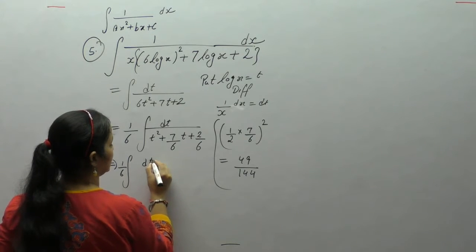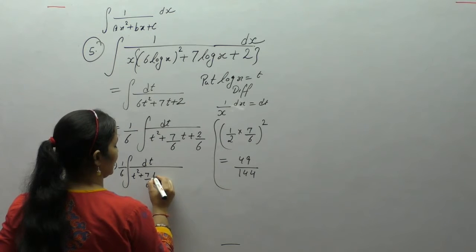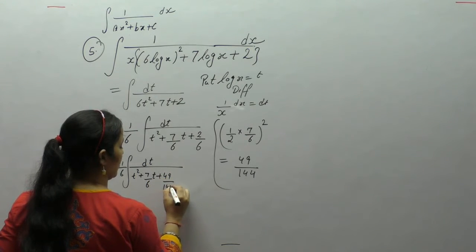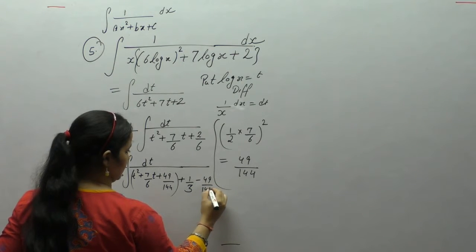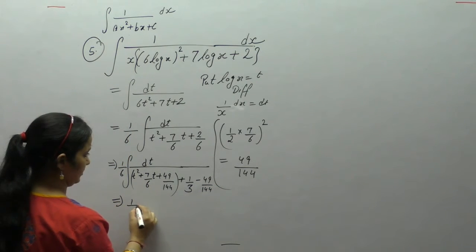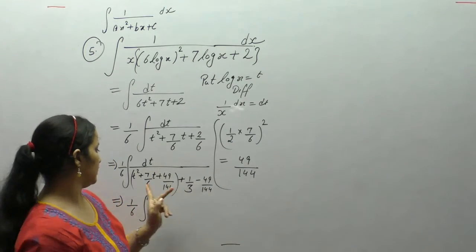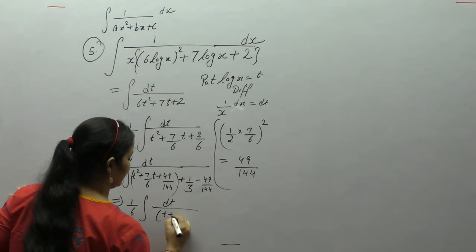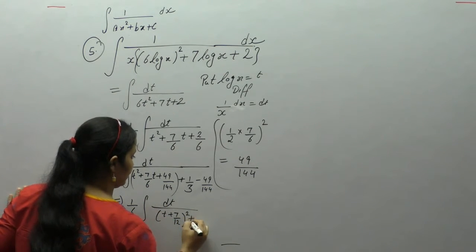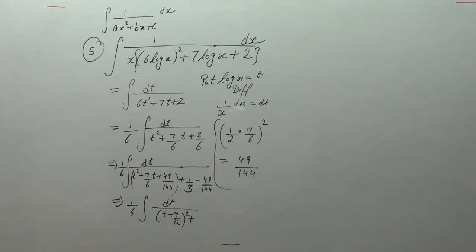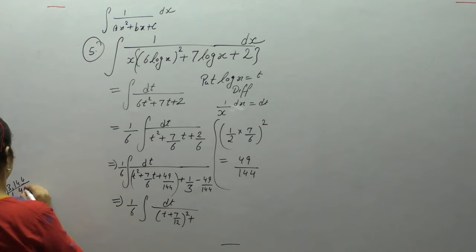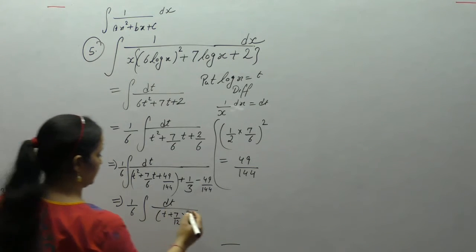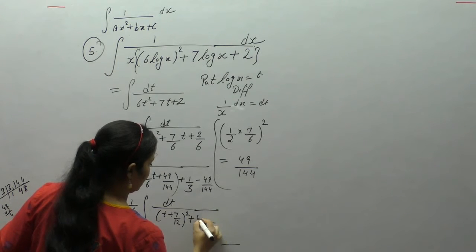So we get (1/6) · dt upon [(t + 7/12)² + (1/3 − 49/144)], which simplifies to (t + 7/12)² plus (48 − 49)/144, giving (t + 7/12)² − 1/144.